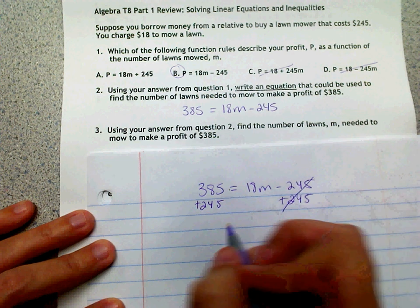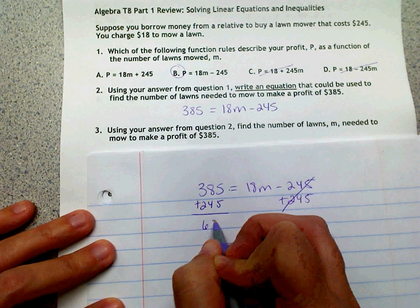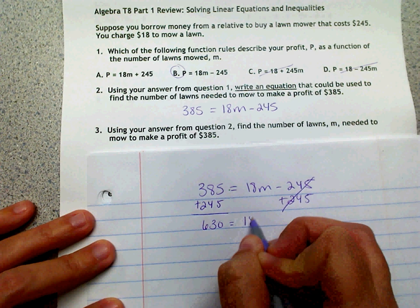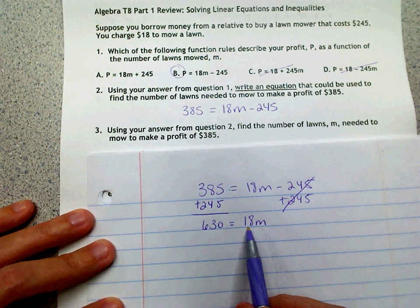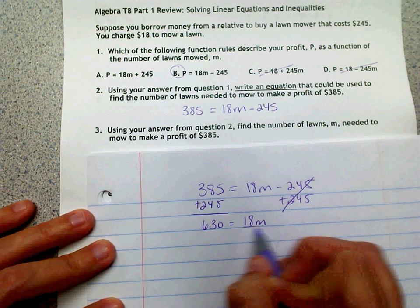And those will cancel out. This, we add those together, it gives me $630. And we bring down our 18M. Since these are being multiplied together, we want to get M by itself, so we're going to divide by 18.